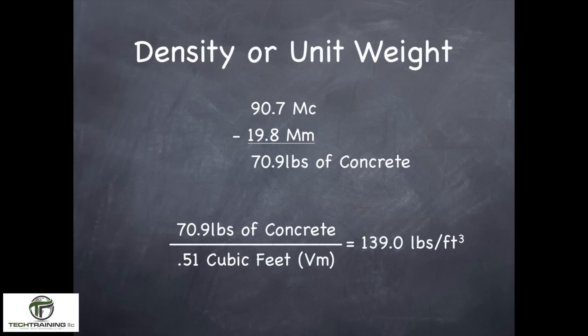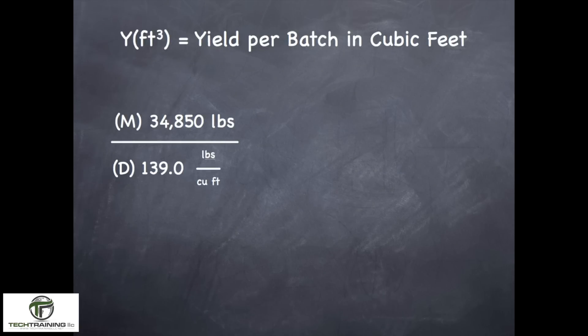The first thing you should have calculated was your unit weight or density, and I hope you wound up at 139.0 pounds per cubic foot. We get this by taking the 90.7 — the weight of the concrete and the measure — subtracting the 19.8, which is the weight of just the measure, giving us 70.9 pounds of concrete. We take 70.9 pounds and divide it by the volume of our bucket, 0.51 cubic feet, and we wind up at 139.0 pounds per cubic foot. For the yield per batch in cubic feet, I hope you came up to 250.7 cubic feet, by taking the weight of all the materials batched and dividing it by the unit weight.